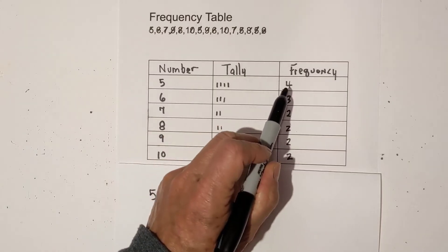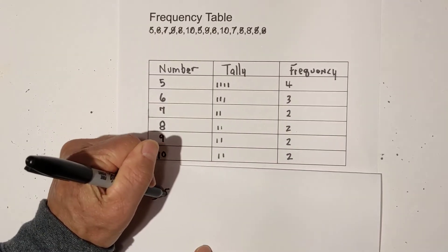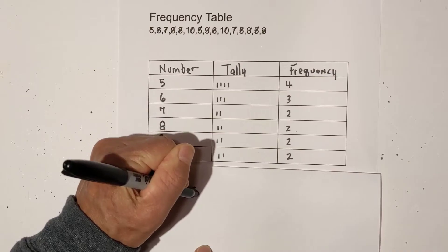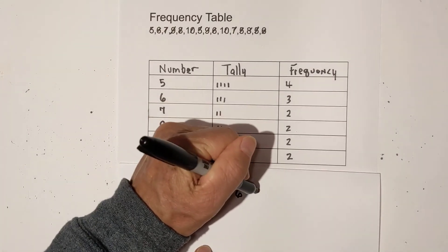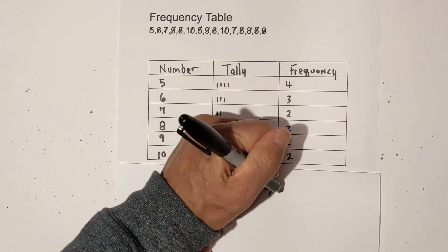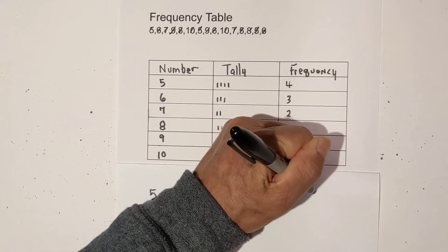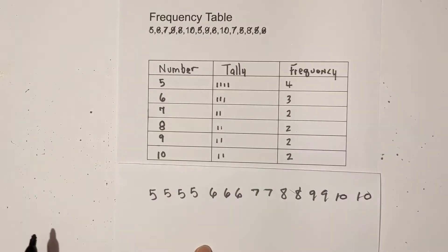And so the frequency table gives you that data. So 5 appears 4 times, then 6 appears 3 times, and then 7 appears 2 times, 8 appears 2 times, same with the 9, and same with the 10.